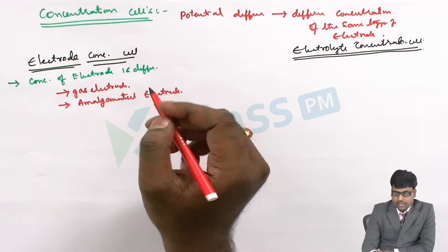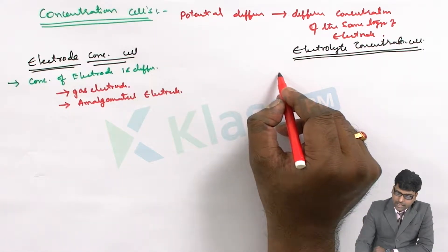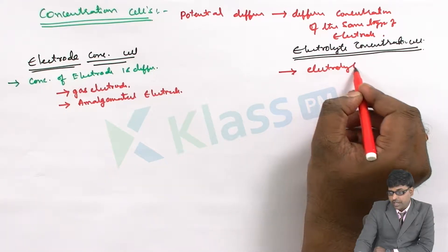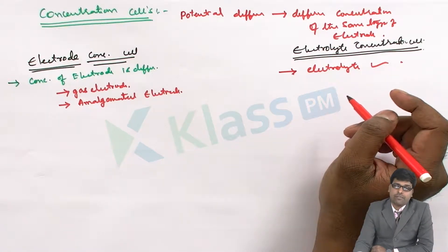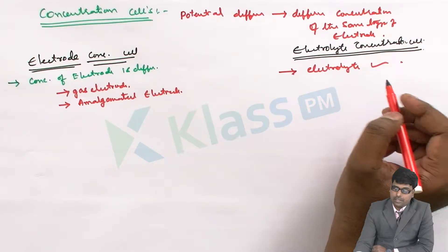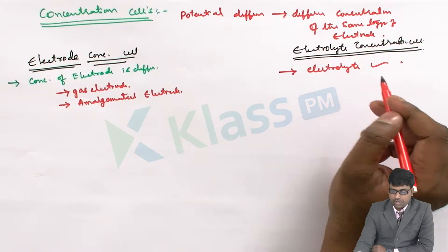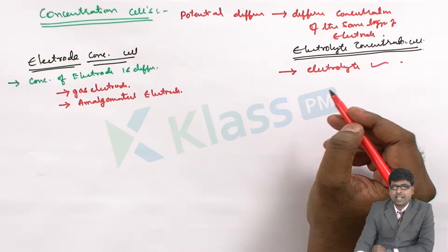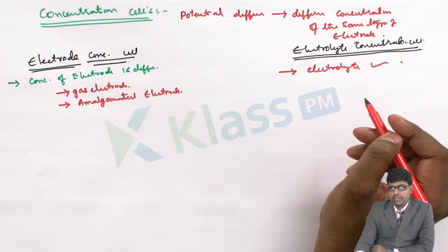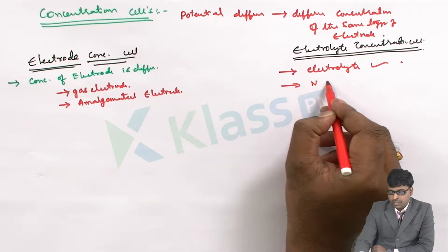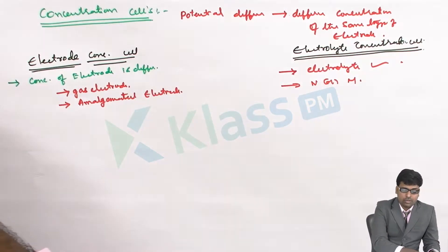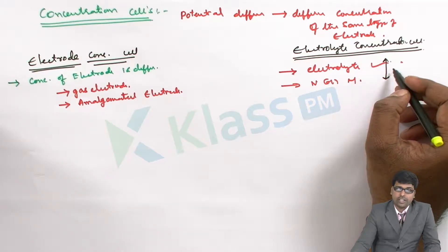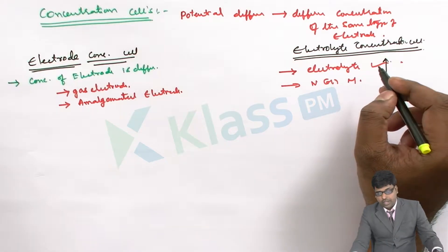In the electrolyte concentration cell, if the electrolyte concentration is different, a potential difference develops and electrons flow through the external circuit. This electrolyte concentration variation may be done by slightly changing the molarity of the electrolyte used in the two different cells. Here you can take any sort of electrode where the concentration of the electrolyte is varied.